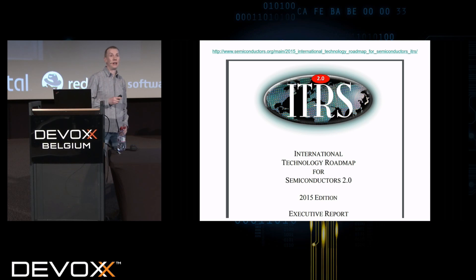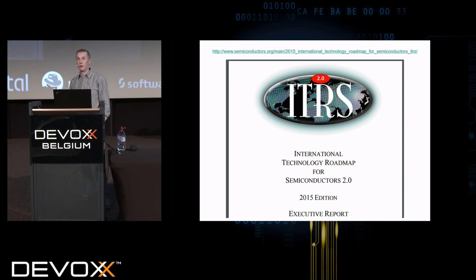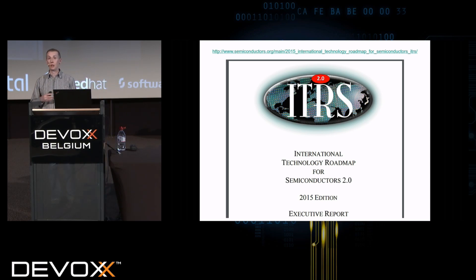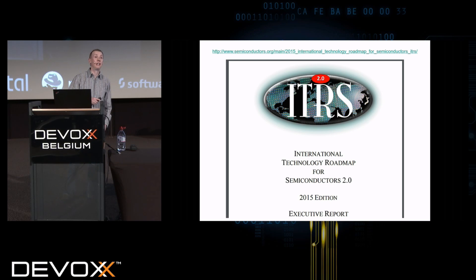There's a paper that came out last year — if anybody hasn't read this, I would recommend doing so. This is where the silicon industry gets together and discusses trends and where things are going for the future. Some really fundamental things came out of this report. One of the things it highlighted is that we are using more and more energy in our data centers, and this is increasing at quite an alarming rate.